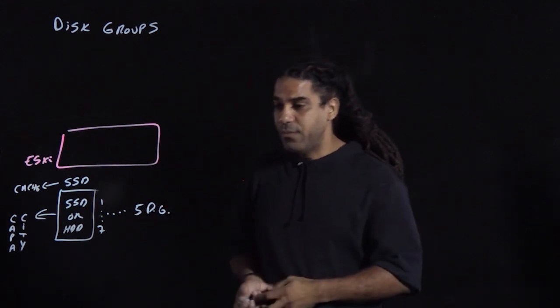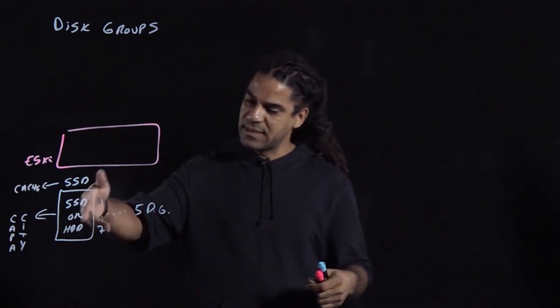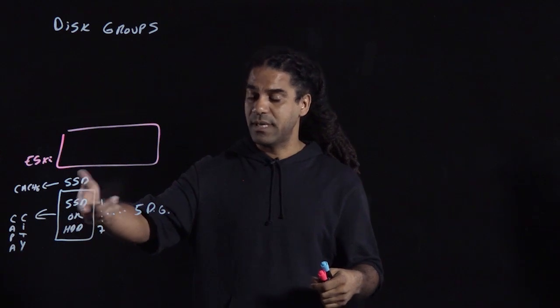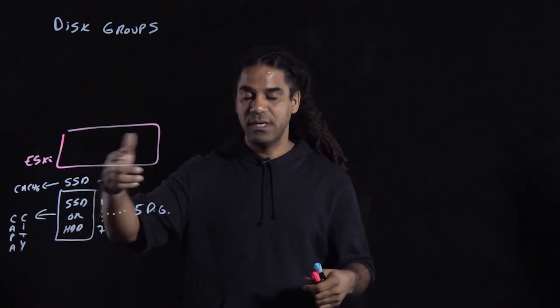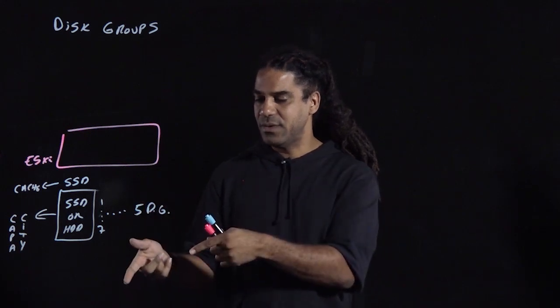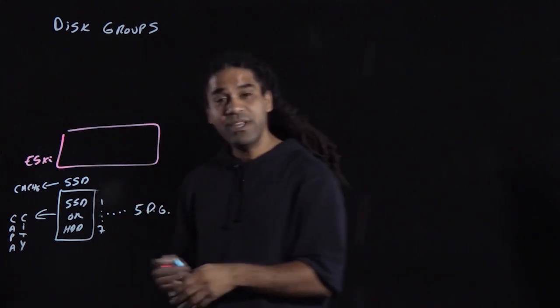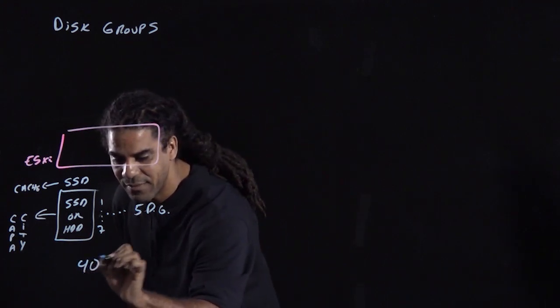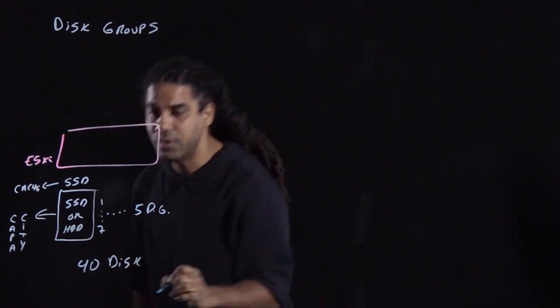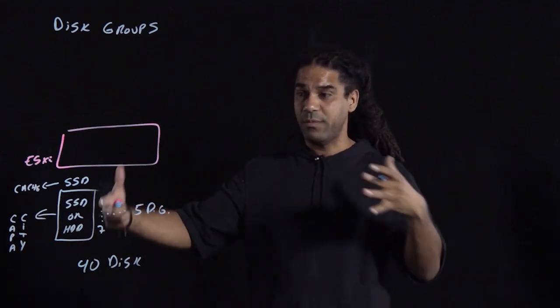If we were to do a quick math for vSAN, you can have seven disks in the disk group in the capacity tier, and then one cache. That means you can have eight different disks in a single disk group times five. That's 40 disks that you can have in a single host providing storage to your vSAN datastore, 35 of which will be for the capacity.